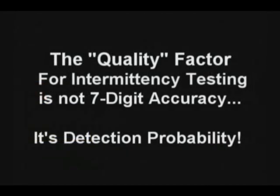What this all boils down to is that intermittent events, by their very definition, occur randomly in time and place. The quality factor that is essential for success, then, is not accuracy, it's probability.